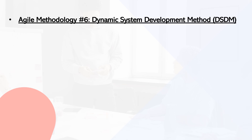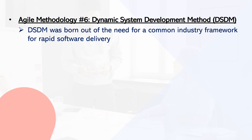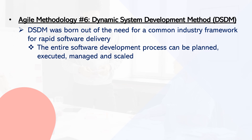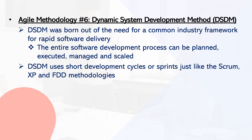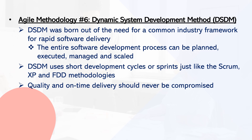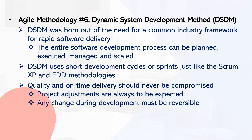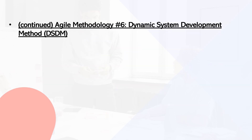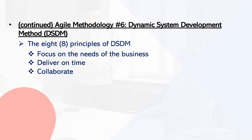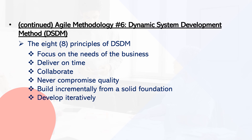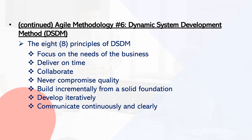Framework number six: Dynamic Systems Development Method (DSDM). DSDM was born of the need for a common industry framework for rapid software delivery. Using DSDM, the whole software development process can be planned, carried out, managed, and scaled. Like Scrum and other agile methodologies, DSDM uses sprints. It believes quality and on-time delivery must never be compromised, project adjustments are always expected, and any development changes must be reversible. DSDM is based on eight principles: focus on the business need, deliver on time, collaborate, never compromise quality, build incrementally from firm foundations, develop iteratively, communicate continuously and clearly, and demonstrate control.